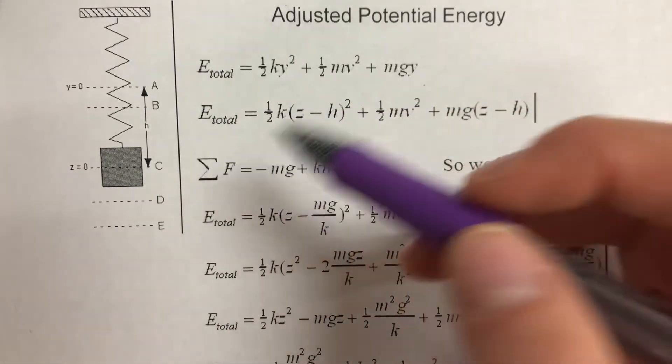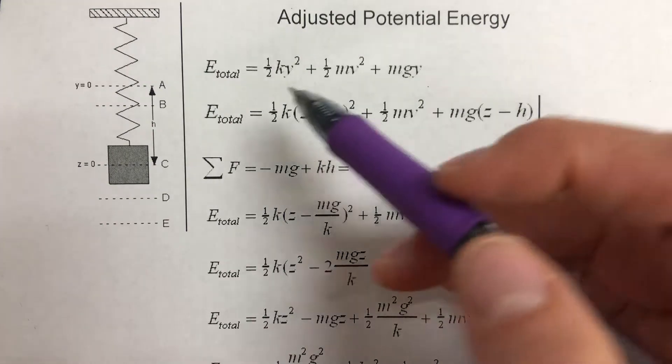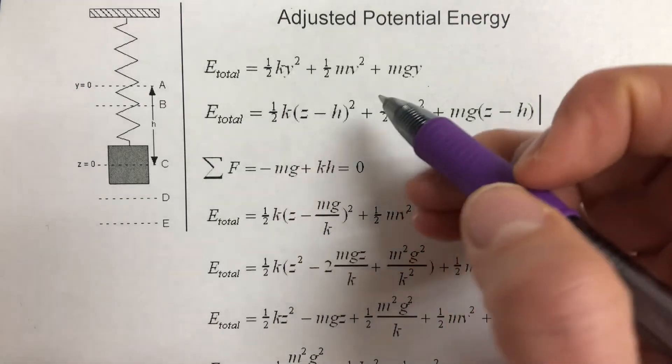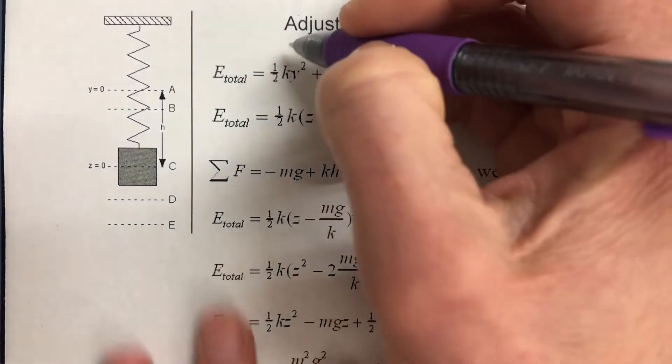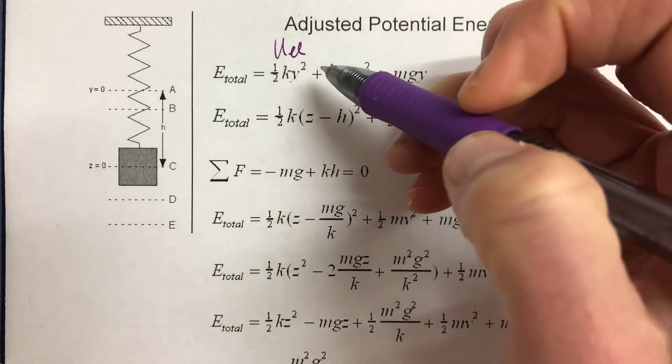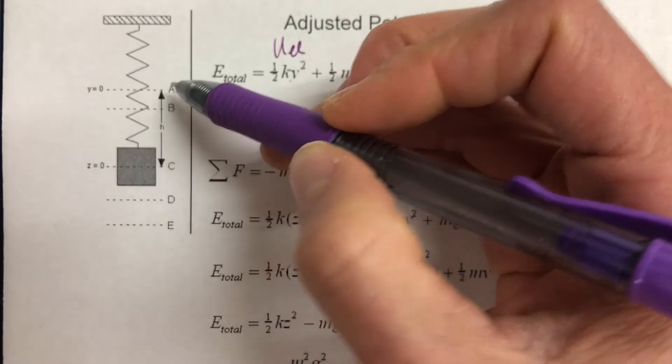So if we write an equation for the total energy of the system, we would have E_total equals 1/2 k y squared. This is elastic potential energy, 1/2 k x squared. But the x is, they're just using y in this situation.